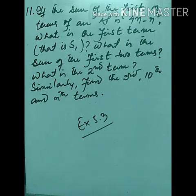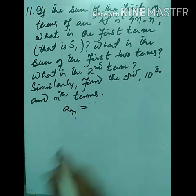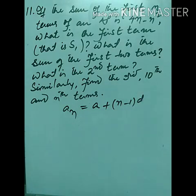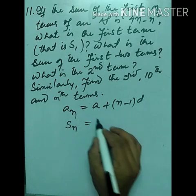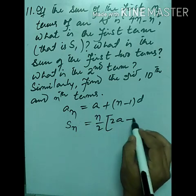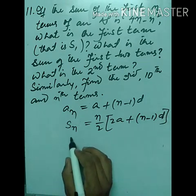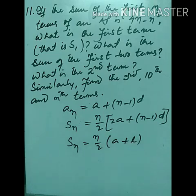Before we start solving, let me remind you of a few formulas we learned earlier. We have aₙ = a + (n−1)d, which gives the nth term. Next, Sₙ, the sum of the first n terms, equals n/2 times [2a + (n−1)d].